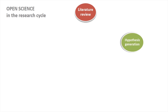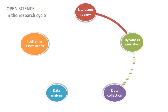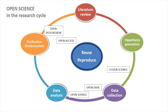Open science means sharing research results as soon as possible in the research process. It aims to make research results reusable and reproducible. Open science involves open access to publications, sharing research data using open source software, open peer review systems, and much more.